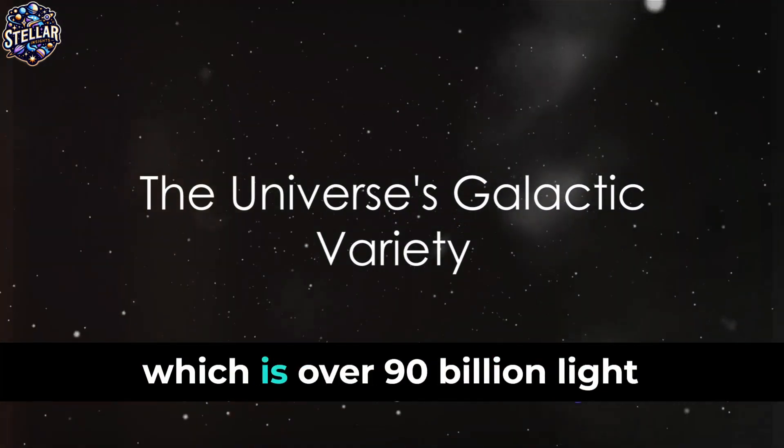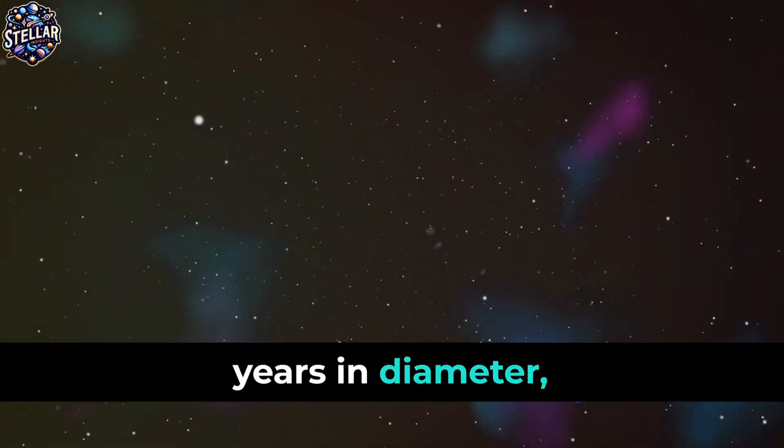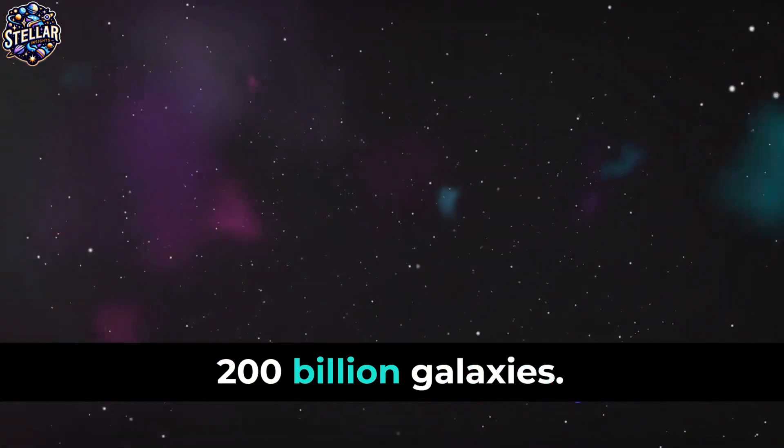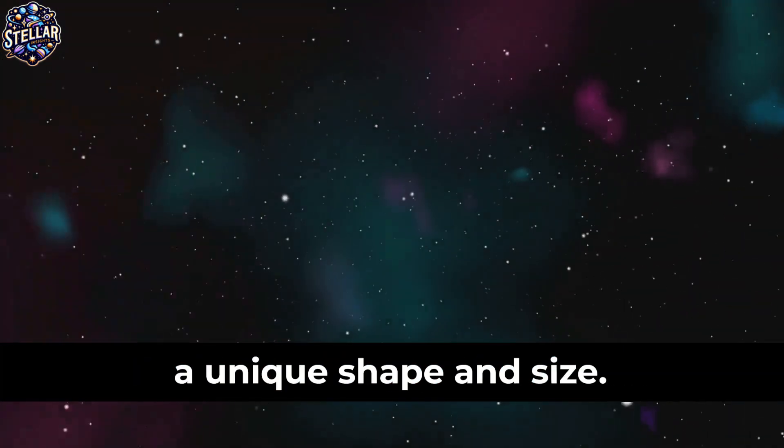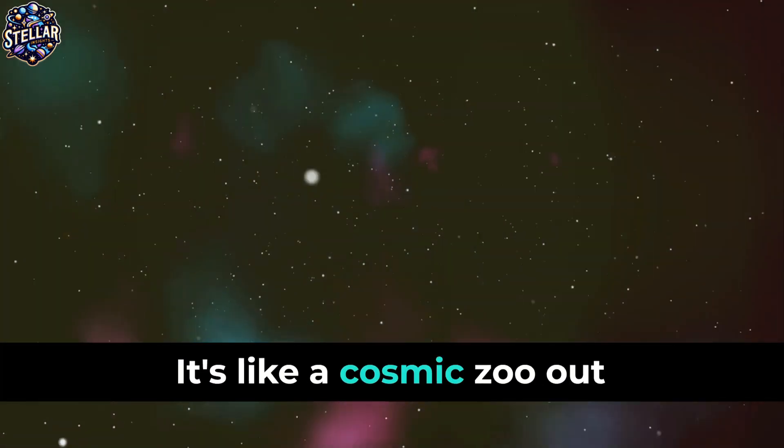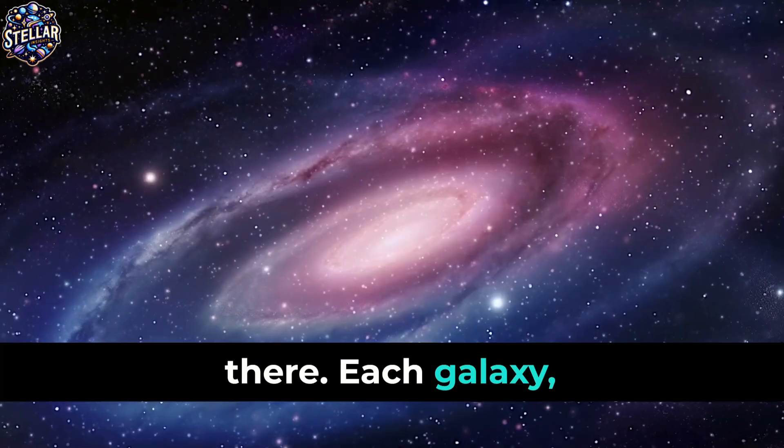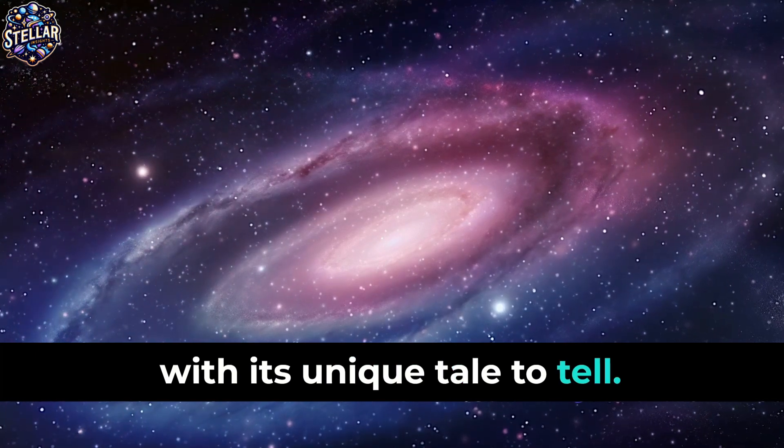The observable universe, which is over 90 billion light-years in diameter, is teeming with around 200 billion galaxies. Each of these galaxies boasts a unique shape and size. It's like a cosmic zoo out there, each galaxy with its unique tale to tell.